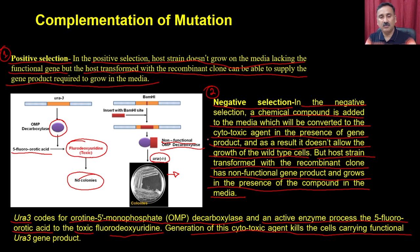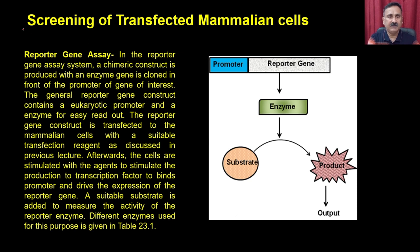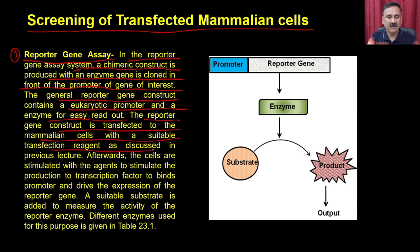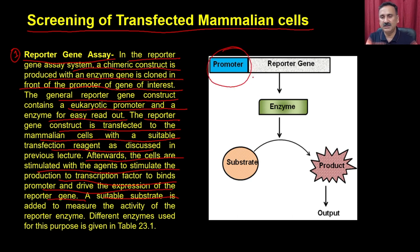These methods are more popular in prokaryotic systems. Now let us talk about how to screen clones in the mammalian system — screening of transfected mammalian cells. The first method is the reporter gene assay. In the reporter gene assay system, a chimeric construct is produced with an enzyme gene cloned in front of the promoter of the gene of interest. The reporter gene construct contains a eukaryotic promoter and an enzyme for easy readout, and is transfected into mammalian cells with a suitable transfection agent.